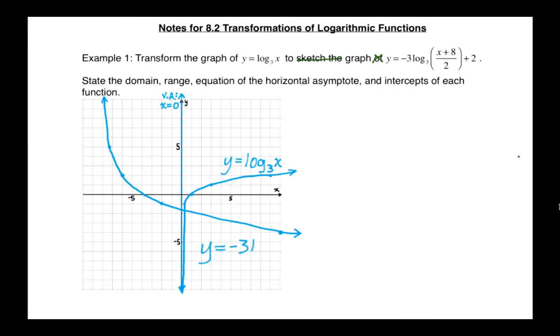So I'm going to fill in the shape of this, put arrows on both ends. I'm going to label this as y equals negative 3, log base 3 of, in brackets, x plus 8, all over 2, close brackets, plus 2 on the end. And now, I'm going to draw in that vertical asymptote. I'm going to label that vertical asymptote. It's x equals negative 8. And now, I have the graph done.